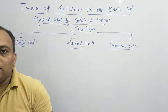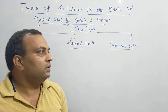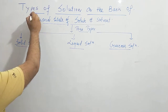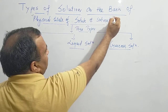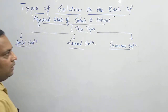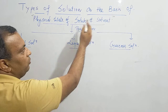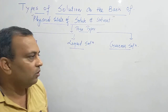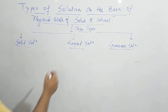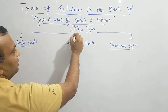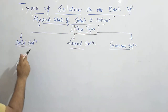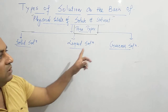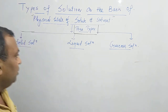Friends, today we will discuss the topic that is the types of solutions on the basis of physical state of solute and solvent. Physical state means whether your solute and solvent are solid, liquid, or gases. So on that basis, basically the solutions are three types: first, solid solutions; second, liquid solutions; and third, gaseous solutions.